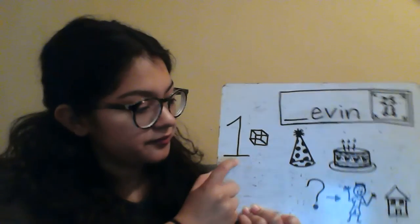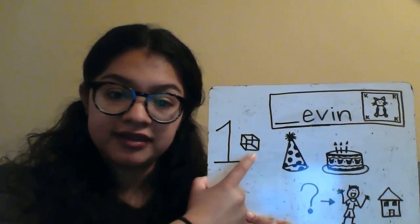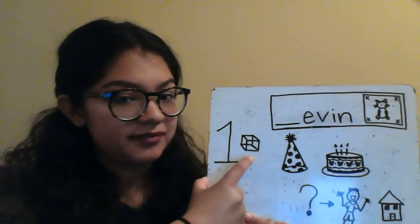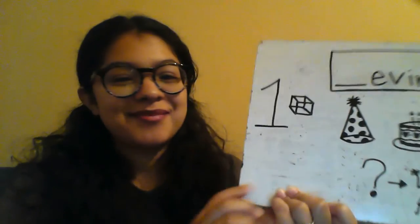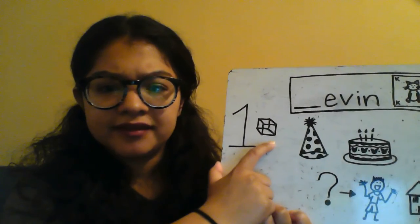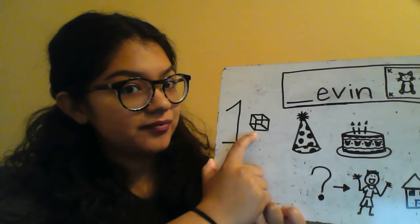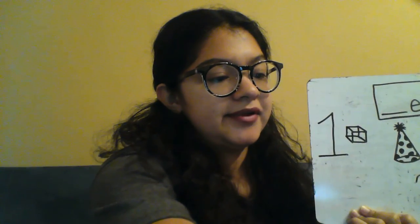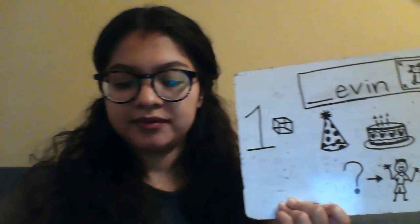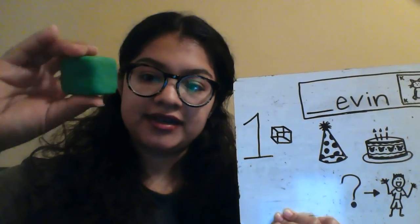Next to our numeral number one, we have the same shape that we had yesterday. Does anybody remember what this shape is called? I remember we said that it kind of looks like a box, like a cardboard box that you would get, but we like to call it a cube. And I remember yesterday I was looking for a cube block at my house, but I don't have any, so I sculpted one out of Play-Doh.